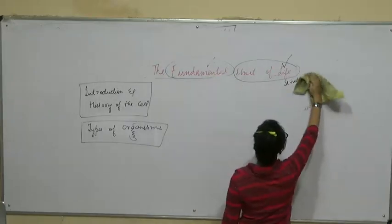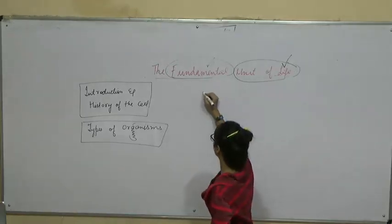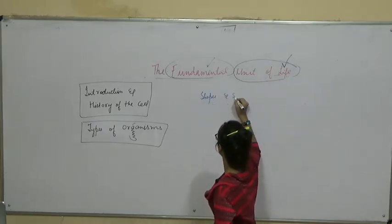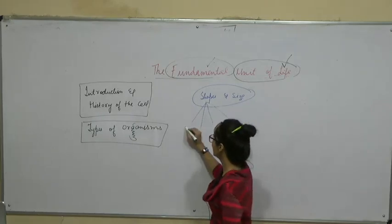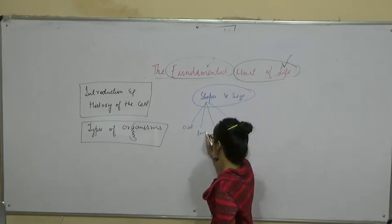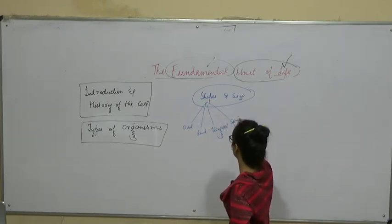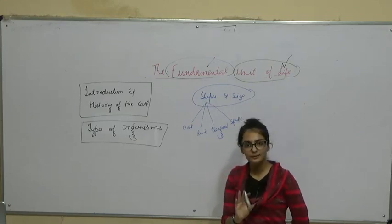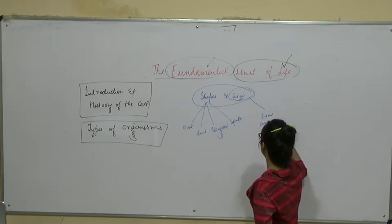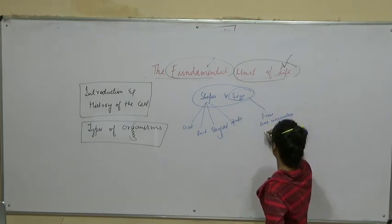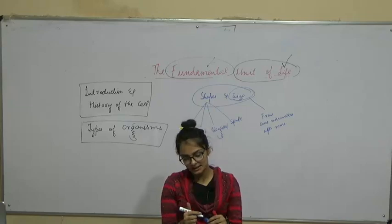Next thing: cell can be of various shapes and sizes. Shapes mein kaun kaun si shapes aa sakti hain? For example, we can take oval shape, we can take round, we can take elongated, we can take spindle shape — yeh sari shape ke cells present hain. Then size varies from some micrometers up to millimeters — kuch micrometers se lekar millimeters tak humare cells ka size vary kar sakta hai.